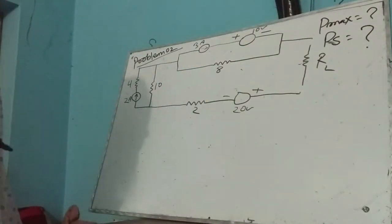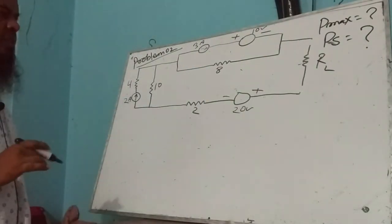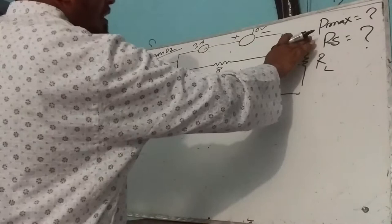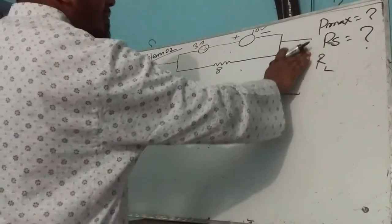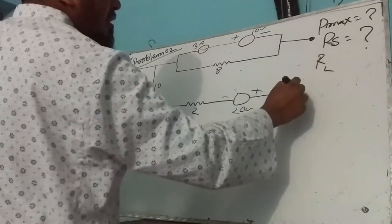What is RL? RL is maximum power. RL is more than source resistance.